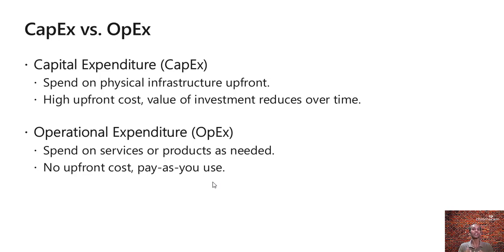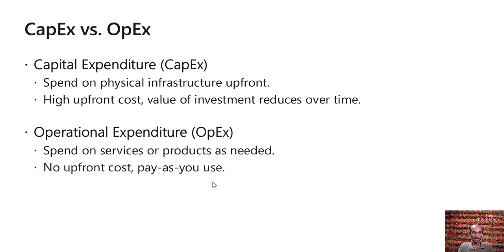So there is a high upfront cost involved and the value of investment reduces over time. Operational expenditure talks about spending on services, products, or resources only when they are needed. You can provision the services for a time period and you will pay only when you are using that service for that time period. This model is known as pay as you use. There is no upfront cost. So cloud computing platforms help you reduce your capital expenditure and move towards operational expenditure.